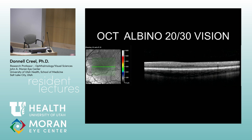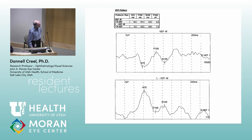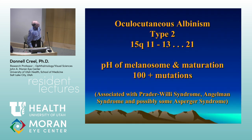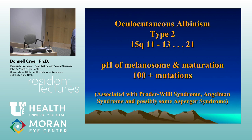Here is an albino with 20/30 vision and there's the OCT — amazing. In the literature there is a paper by a retinitis specialist at Stanford named Michael Marmor who found normally pigmented people like us with these kinds of flat foveas who are still 20/25 to 20/30 — just amazing. Type 2 albinism is on chromosome 15, has a different metabolic cause, and you also get some association possibly from linkage with Prader-Willi syndrome, Angelman syndrome, and perhaps some Asperger syndrome, which are on chromosome 15 in adjacent loci.